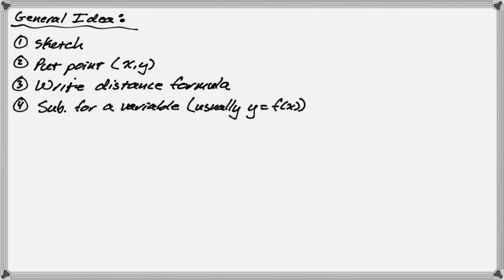That'll probably have too many variables in it. So we want to sub for a variable. The one you usually sub for is y = f(x). And then you'll have something entirely in terms of x. The next thing we want to do is take the derivative of the distance or of the distance squared, which is usually easier.